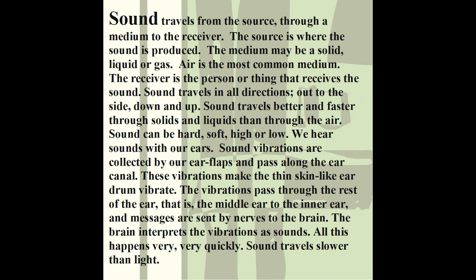For a quick summary: sound travels from the source through a medium to the receiver. The source is where the sound is produced. The medium may be a solid, liquid, or gas — air is the most common medium. The receiver is the person or thing that receives the sound. Sound travels in all directions — out to the side, down and up. Sound travels better and faster through solids and liquids than through air. Sound can be hard, soft, high, or low. We hear sound with our ears. Sound vibrations are collected by our ear flaps and pass along the ear canal. These vibrations make the thin skin-like eardrum vibrate, then pass through the middle ear to the inner ear. Messages are sent by nerves to the brain, and the brain interprets the vibrations as sound. All this happens very quickly. Sound travels slower than light — light travels faster than sound.